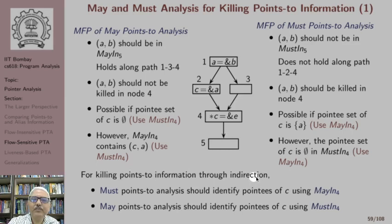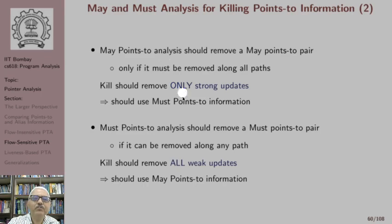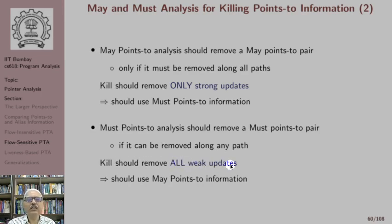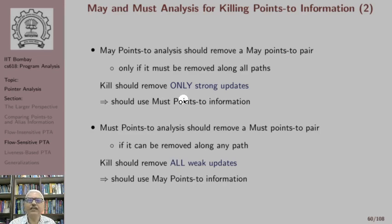To summarize: for killing points-to information through indirection, must points-to analysis should identify pointees of c using may-in, and may points-to analysis should identify pointees of c using must-in. So when we want to perform strong updates in may points-to analysis we should use must points-to information. In must points-to analysis we use weak updates, so kill should be computed using may points-to information. There is an inverse dependence of may and must points-to analysis for killing points-to information.